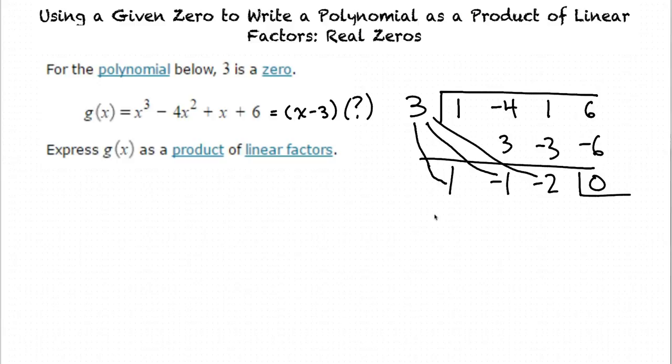We therefore have 1x squared minus 1x minus 2, or x squared minus x minus 2, which is the result of x cubed minus 4x squared plus x plus 6 divided by x minus 3.